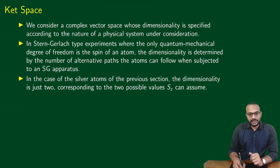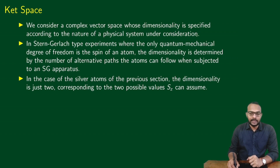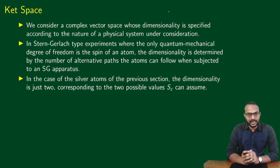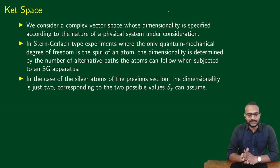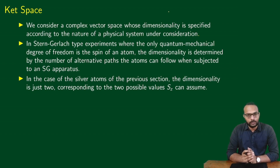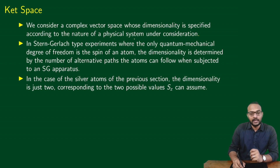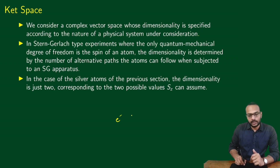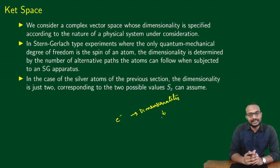We will be considering a complex vector space whose dimensionality is specified according to the nature of the physical system under consideration. We had said that the three-dimensional real vector space will not be sufficient to describe the quantum mechanical world, but we need a different sort of vector space — a complex vector space. And what about the dimensionality of this complex vector space? For example, if you are talking about the electron, the dimensionality of the vector space will depend on how many different things the electron can actually do.